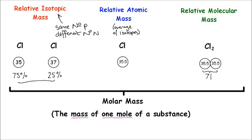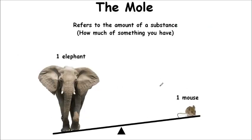We're going to look at a slightly different example to atoms as a method of understanding moles a little bit easier. The mole refers to the amount of substance that you have — how much of something you have. The mole is basically just a number. One of the problems with the mole — and this is probably where most students slip up — is you think that the mole directly refers to the mass of something or the concentration of something. But it's not. The mole is just the number of something that you have.